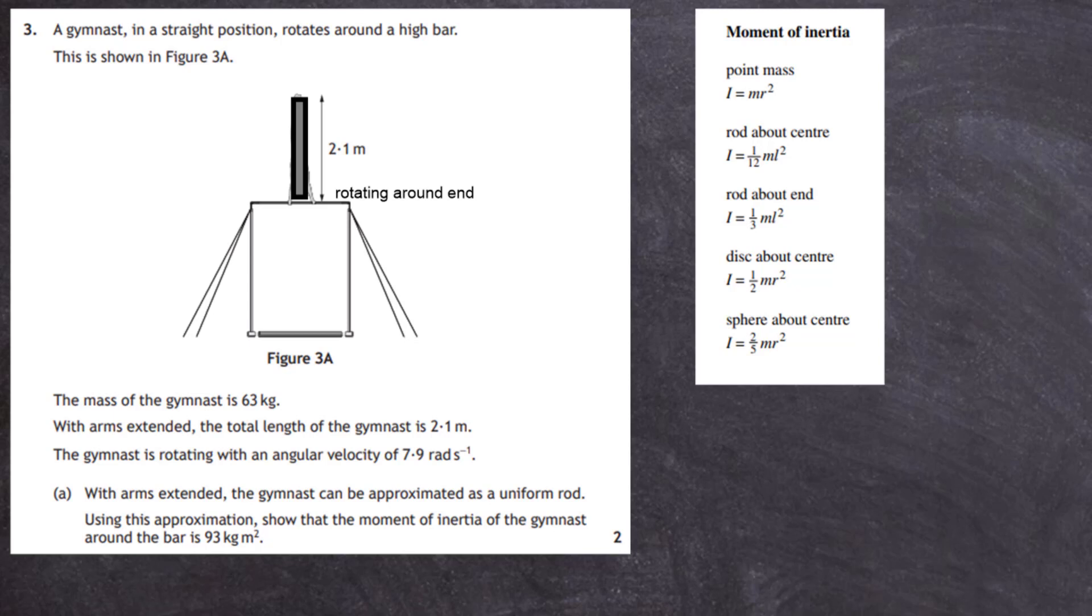This rod, this gymnast, we treat the gymnast as a rod, is rotating around the top bar. So the one we're looking for, the moment of inertia, is that one there. It is the rod about the end. And the moment of inertia I is equal to one third the mass times the length squared.